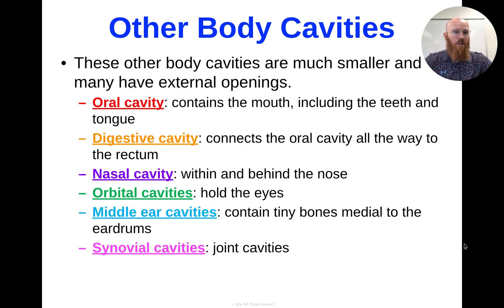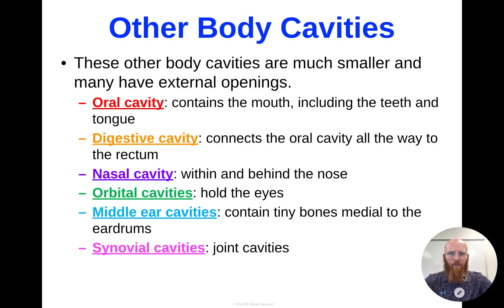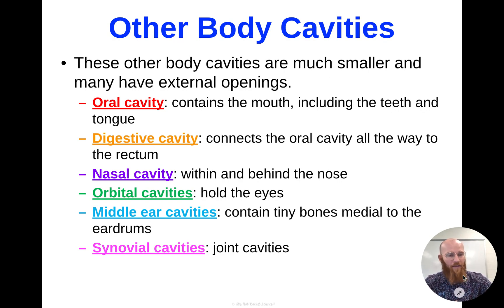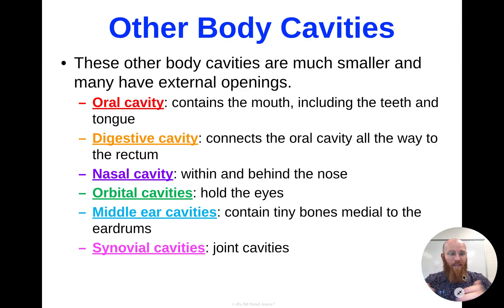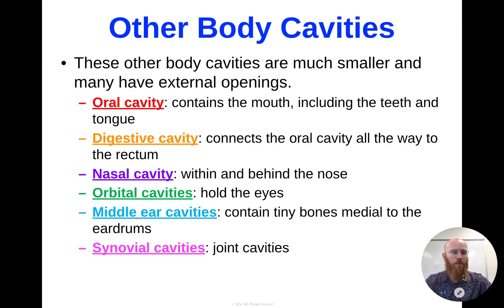Some other quick cavities we'll need to know — these are usually much smaller and may have external openings. You've got your oral cavity, which houses the mouth, teeth, and tongue. Your digestive cavity connects your oral cavity all the way to the rectum — your entire digestive tract from mouth to anus. You've got the nasal cavity within and behind your nose, your orbital cavities which house your eyes, your middle ear cavities with all those tiny bones medial to your eardrums, and your synovial cavities where your joints are located — we'll cover those in depth during skeletal and muscular.